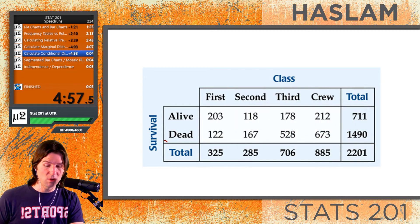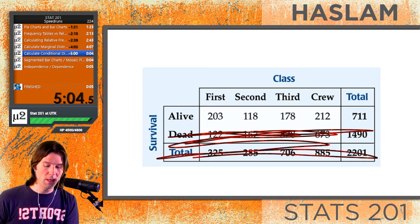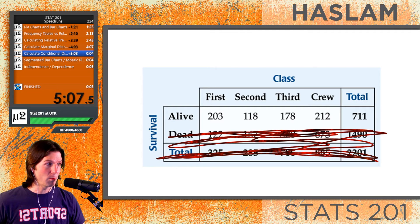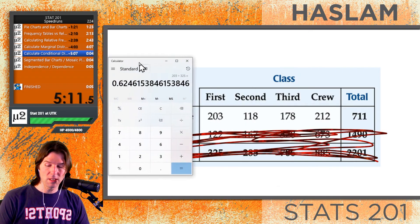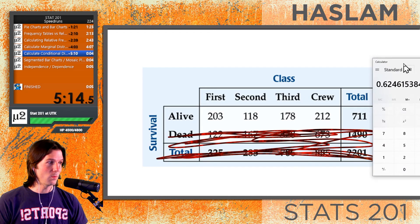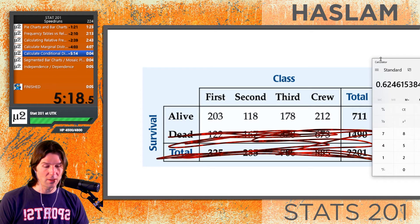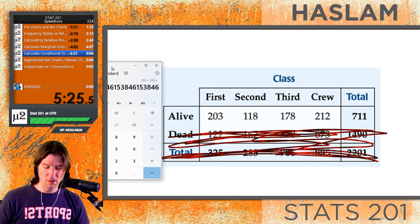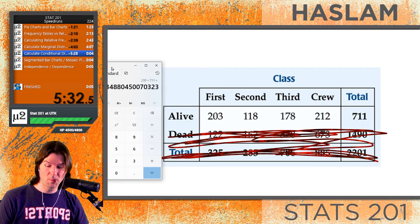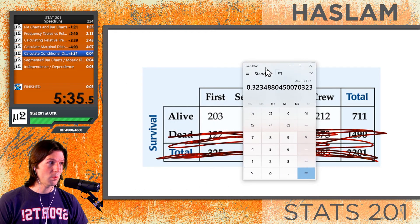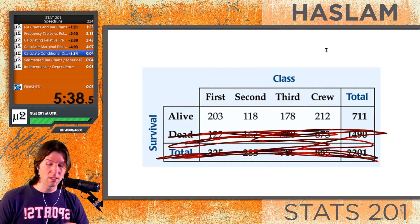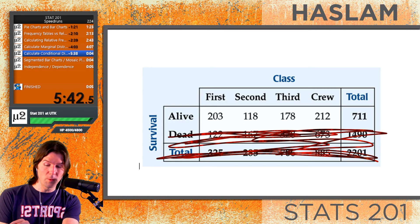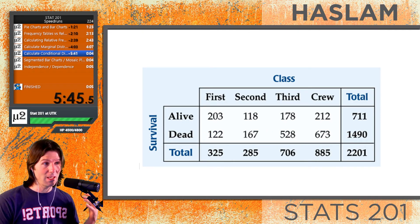You can do other conditional distributions by choosing another condition. Given someone was alive — or for all the people who are alive — what's the probability they were in first class? Notice how we're only focusing on this data. That would be 203 divided by 711, because we're only focusing on the people who are alive. The conditional distribution sets a condition and looks within it.